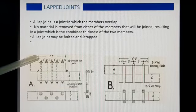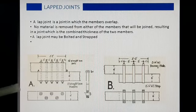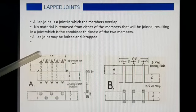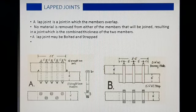यह जो overlap है, हम सामान्यतः 3 से 4 times रखते हैं हमारे cross section का, यानि कि timber का जो cross section है उसका 3 से 4 गुना overlap लिया जाता है. यह overlap इस बात पे भी निर्भर करता है कि हमारी लकड़ी कौन सी है, लकड़ी की shear strength क्या है, और वो काम में कहाँ ली जा रही है.